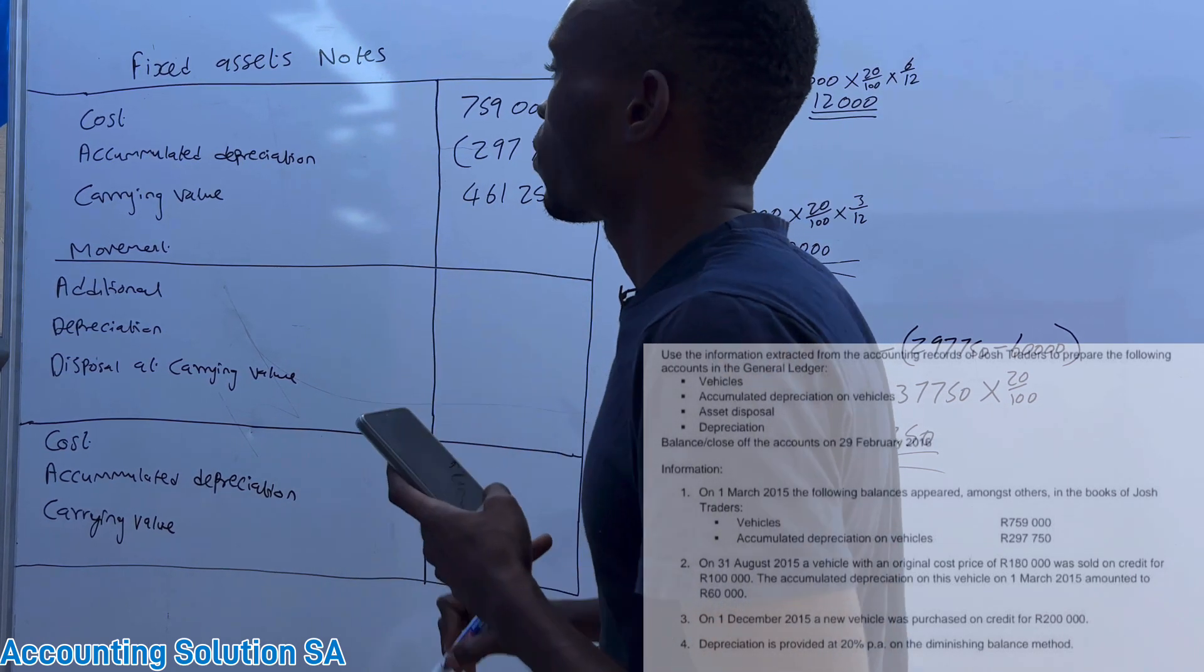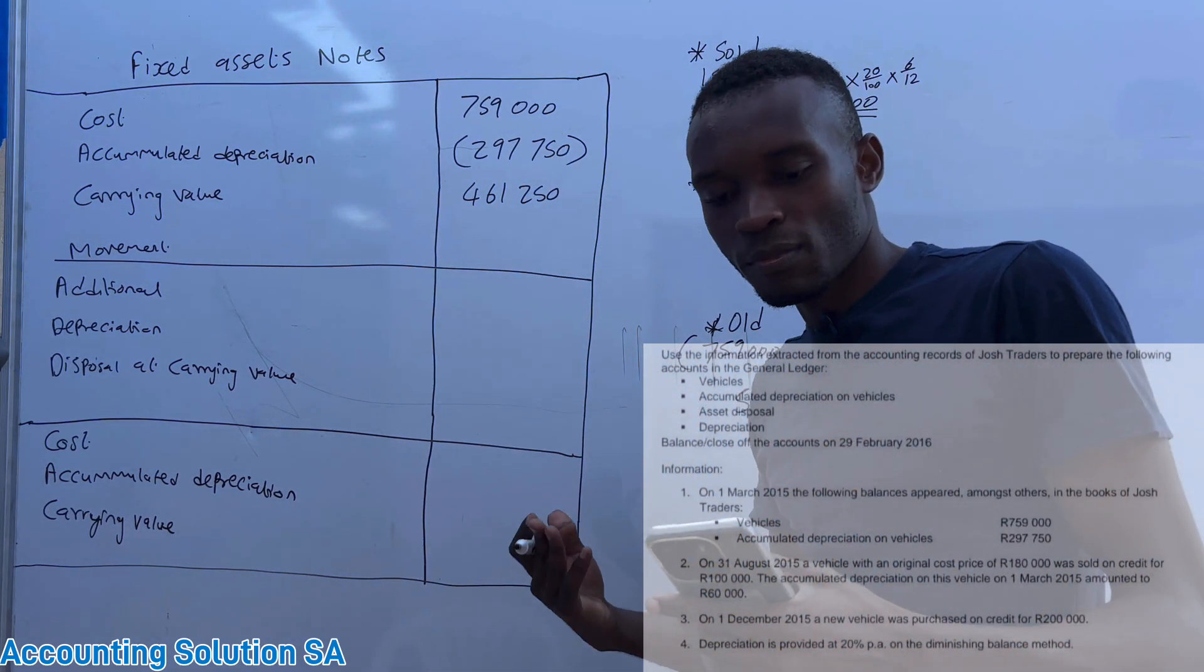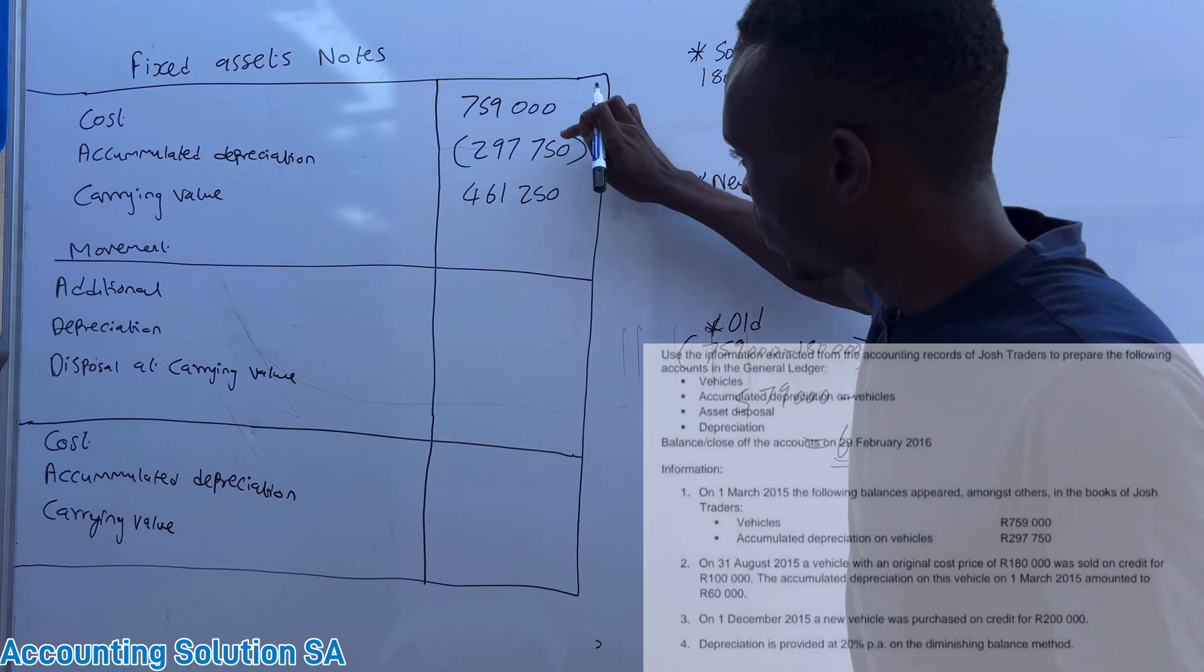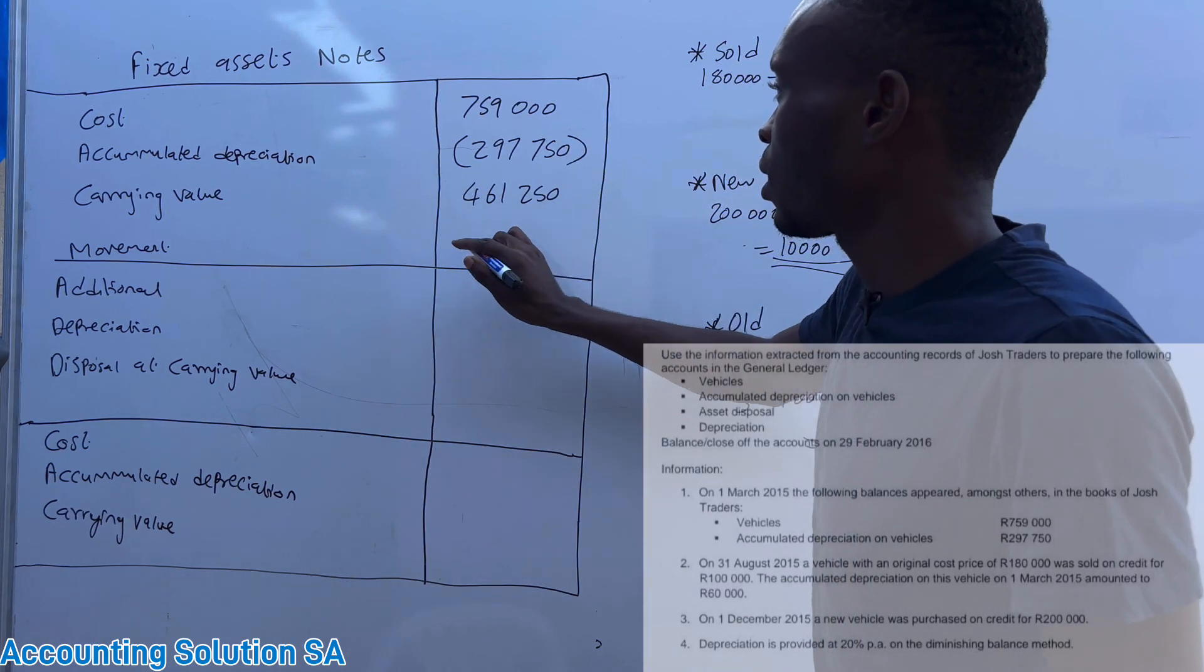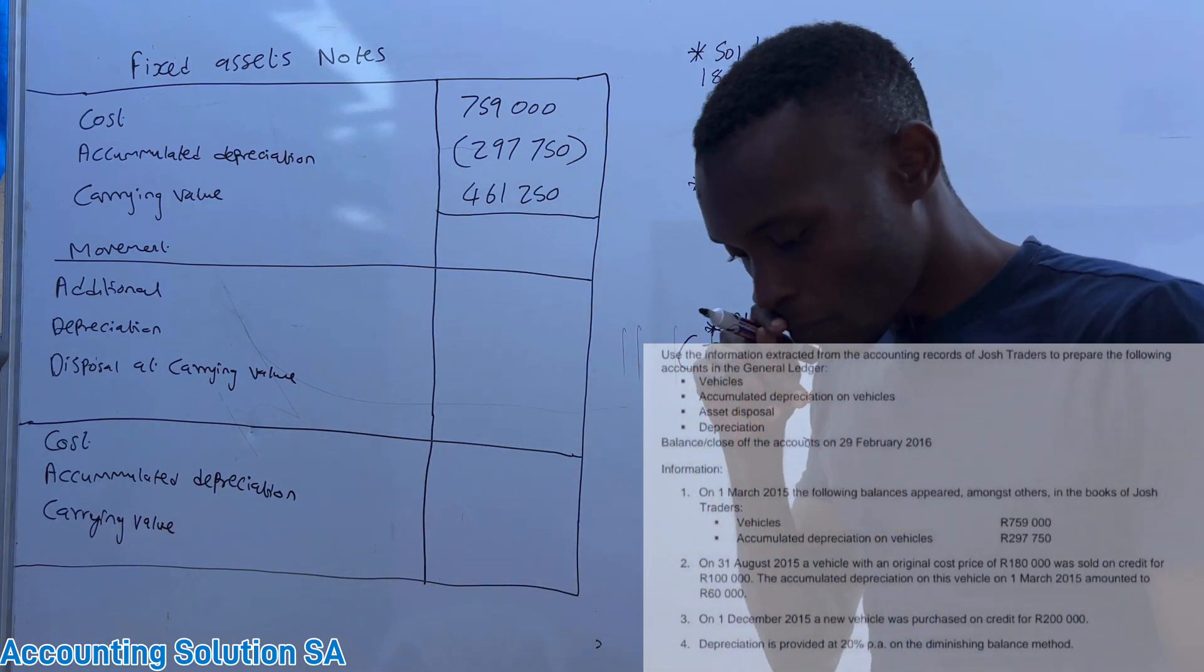Remember accumulated depreciation and cost price we just copied from the balance, then after that we subtracted these two, then it gives us a carrying value or carrying amount. Now we can proceed.